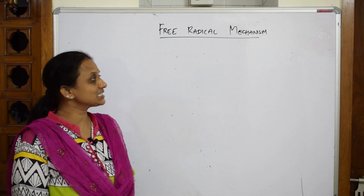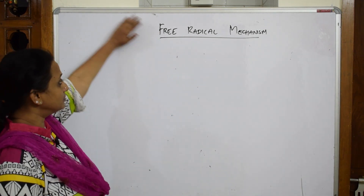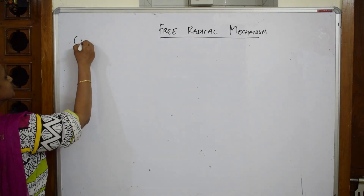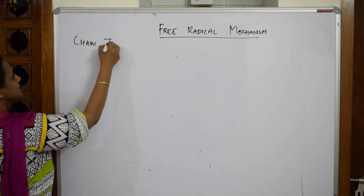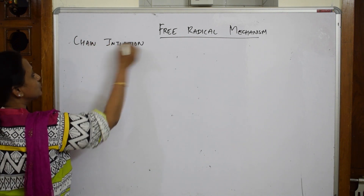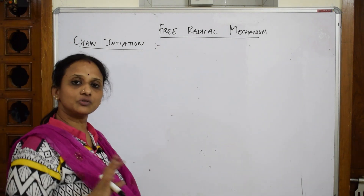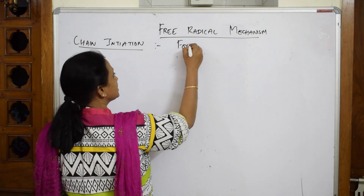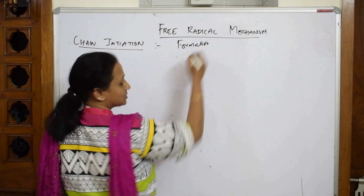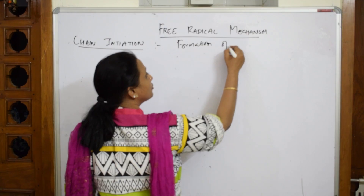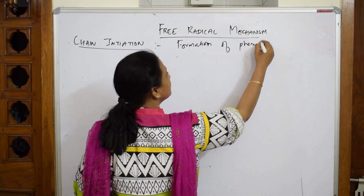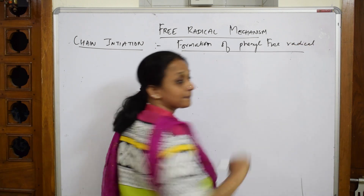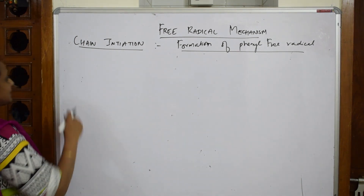Let's start with the mechanism. You require a catalyst and a monomer. In the first step, chain initiation, the main concept is the formation of a free radical, which follows a free radical mechanism. You write 'formation of phenyl free radical' to show the examiner you are clear with the concept.